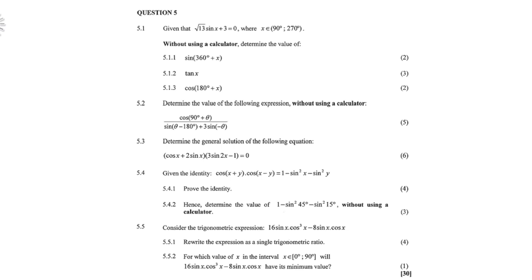5.5: consider the trigonometric expression 16 sin x cos³x − 8 sin x cos x. Rewrite the expression as a single trig ratio. And 5.5.2: for which value of x in the interval 0 to 90 degrees will 16 sin x cos³x − 8 sin x cos x have its minimum value? Take note: 0 to 90 is in the first quadrant.